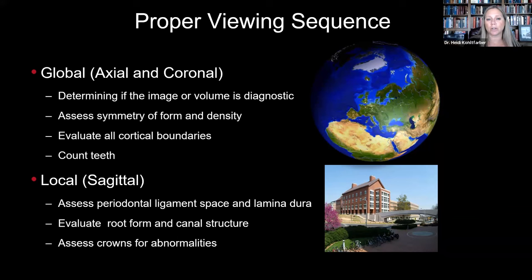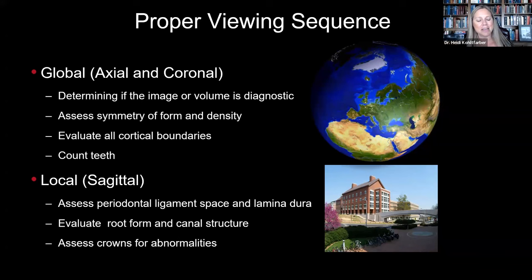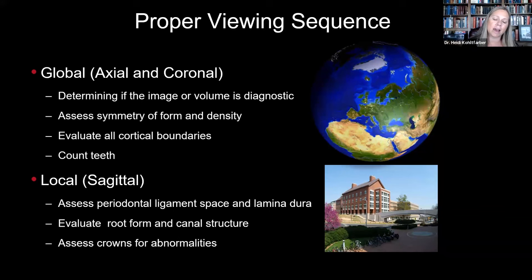We want to look at the symmetry of form and density and evaluate the cortical boundaries. We can't differentiate soft tissues well with CBCT, so we spend a lot of time looking at those cortical boundaries — if they're not there, it could tell us there's a pathology. We can look at everything related to the dentition, but we can see it a lot better in the sagittal sections, where we can look at the periodontal ligament space, the lamina dura, evaluate canal structure, or assess crowns for abnormalities.